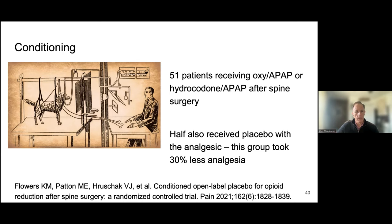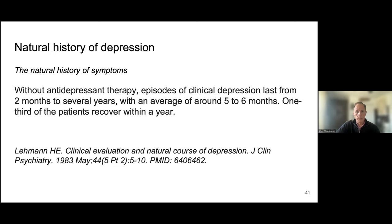The third reason antidepressants may not outperform placebo is the natural history of depression. Episodes of depression last from two months to several years, with an average of around five to six months. One third of patients recover within a year. That's a huge variation in natural history, but it tells us that some people, regardless of treatment, are going to get better — or they're getting better as we're treating them simply because of natural history.